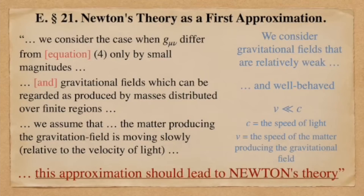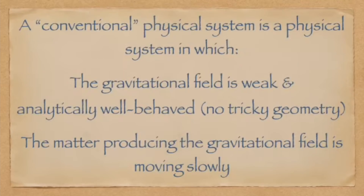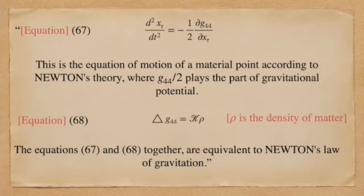To simplify the presentation, I'm going to introduce the term 'conventional physical system' — one in which the gravitational field is weak and analytically well-behaved, and the matter generating the gravitational field is moving slowly relative to the speed of light. Returning to Einstein's paper, he plugs these assumptions into his theory and derives an equation for the acceleration of a particle within a gravitational field — equation 67 — and the form for the gravitational potential in equation 68.